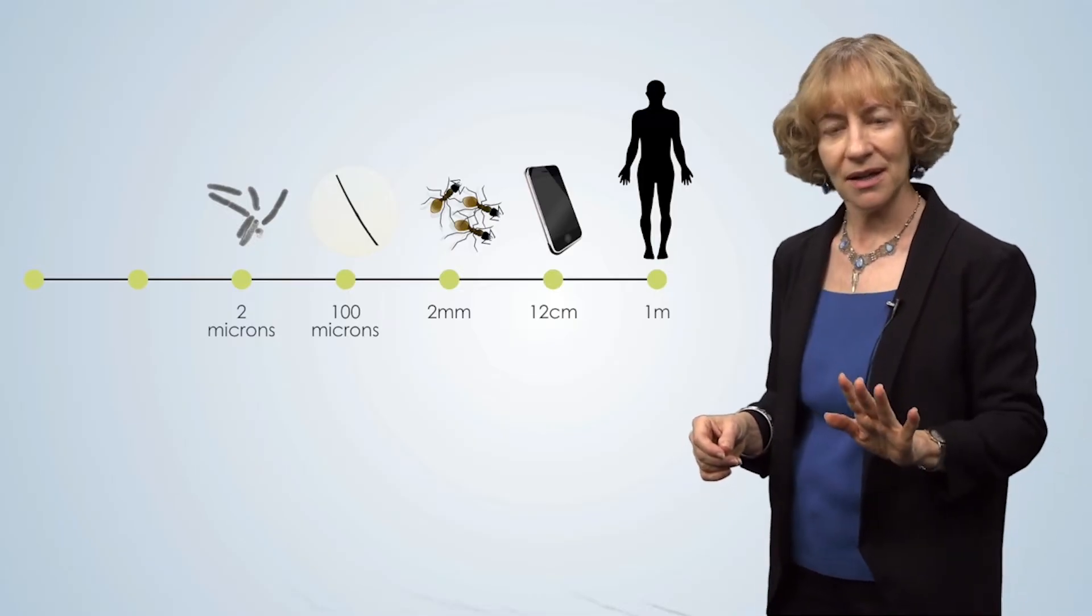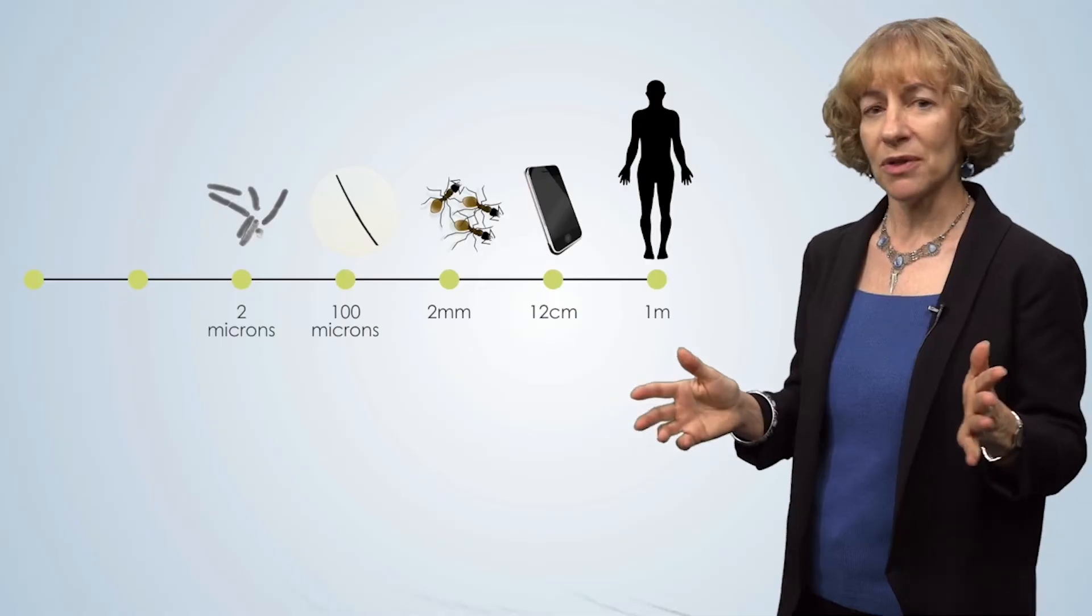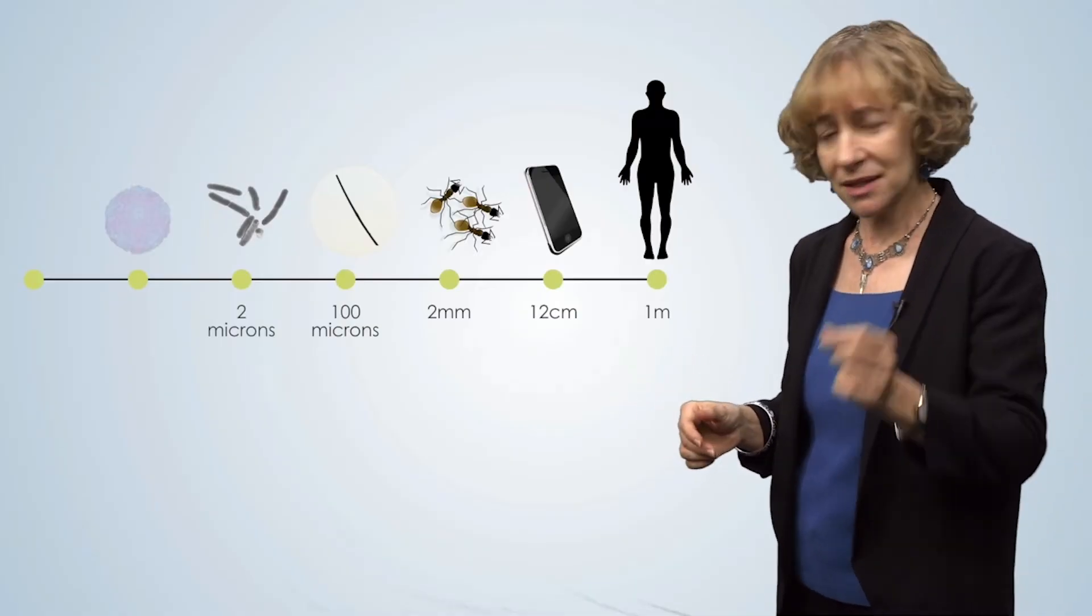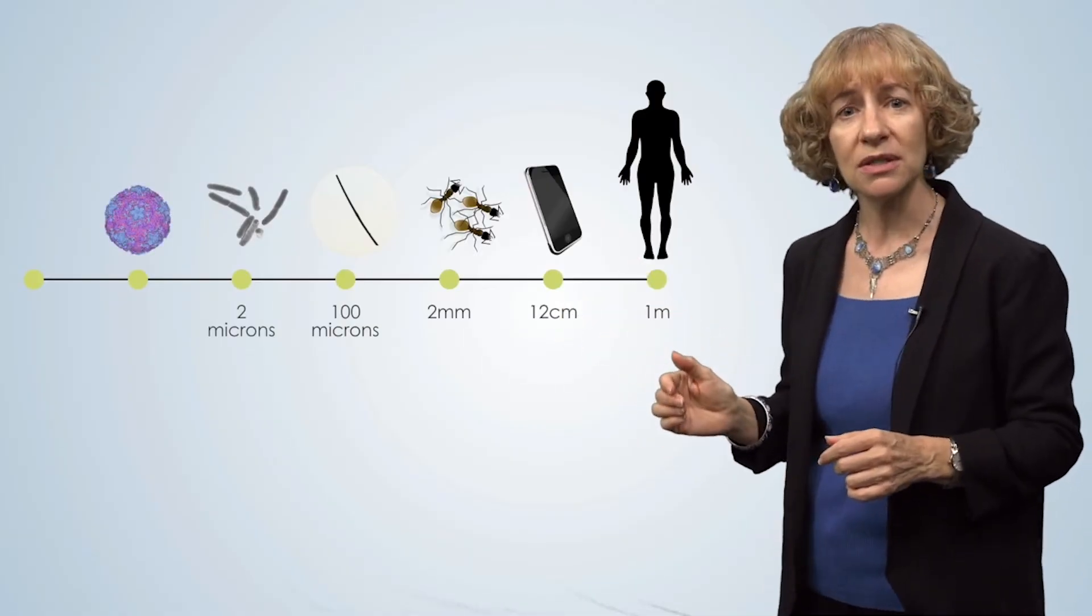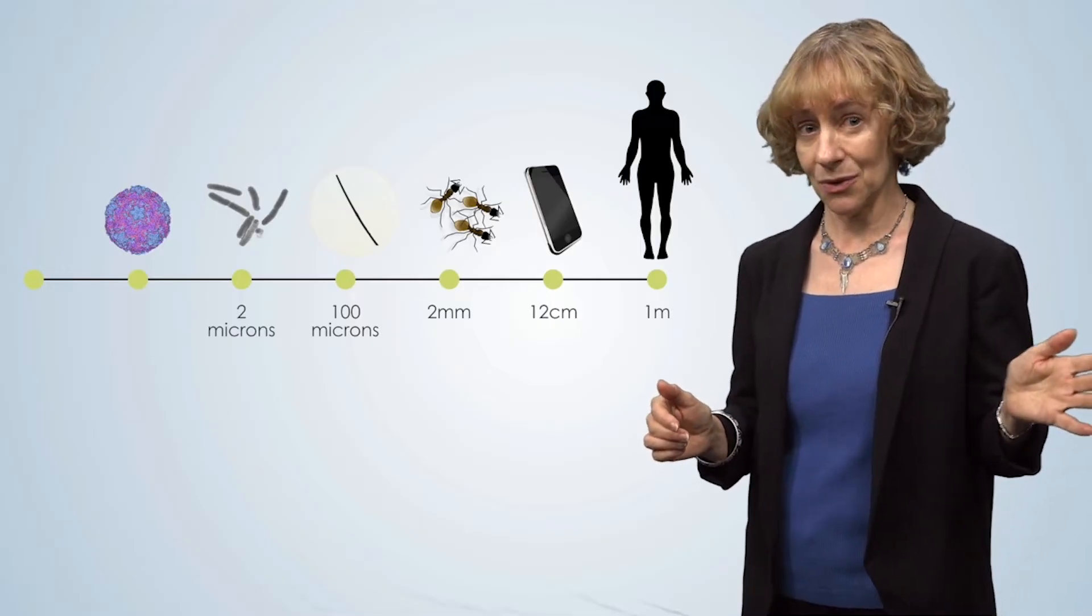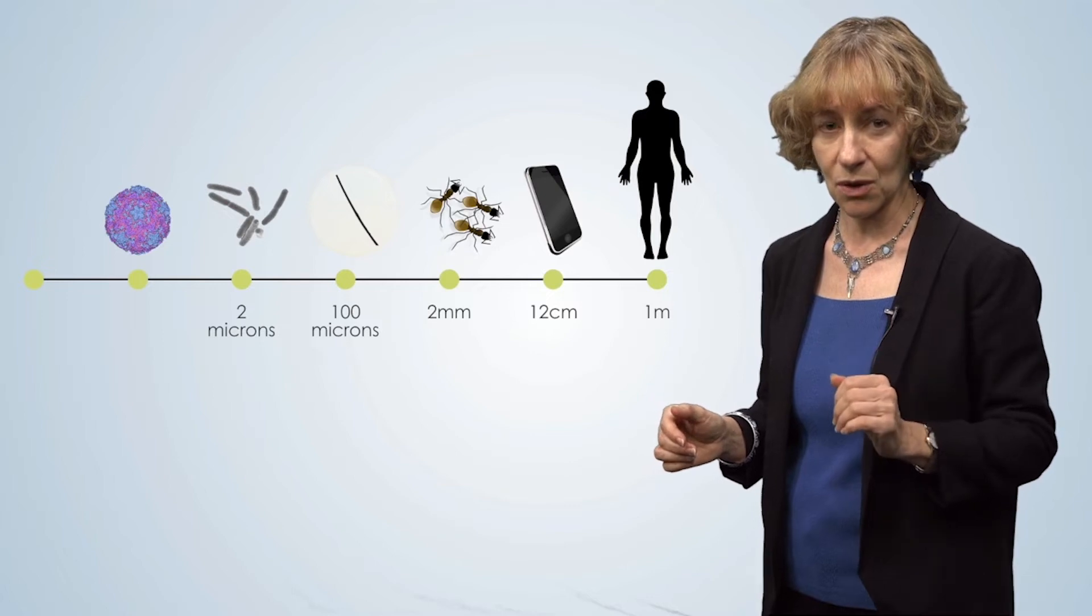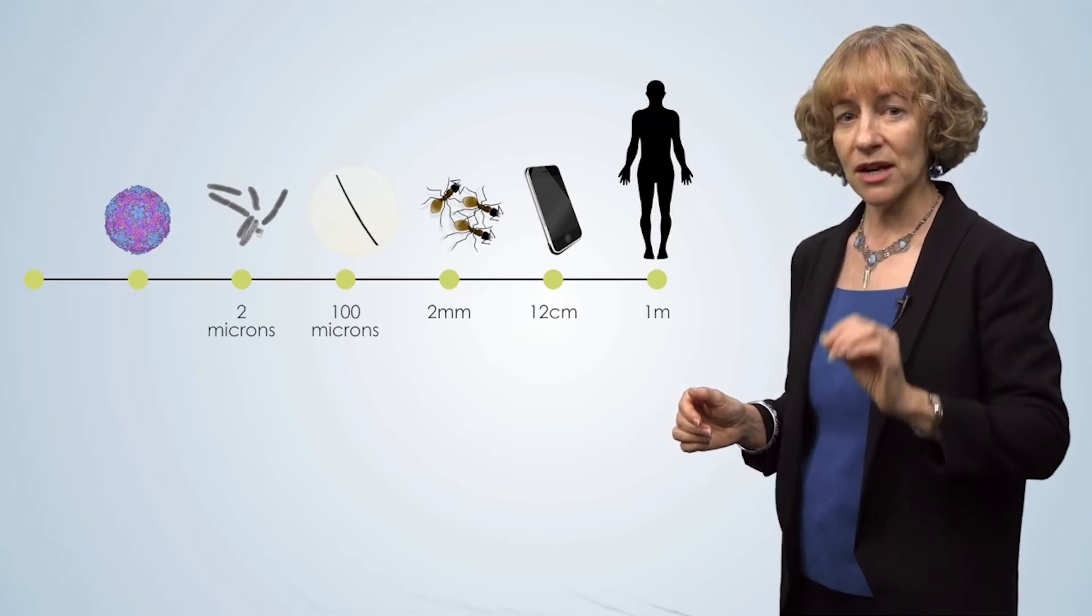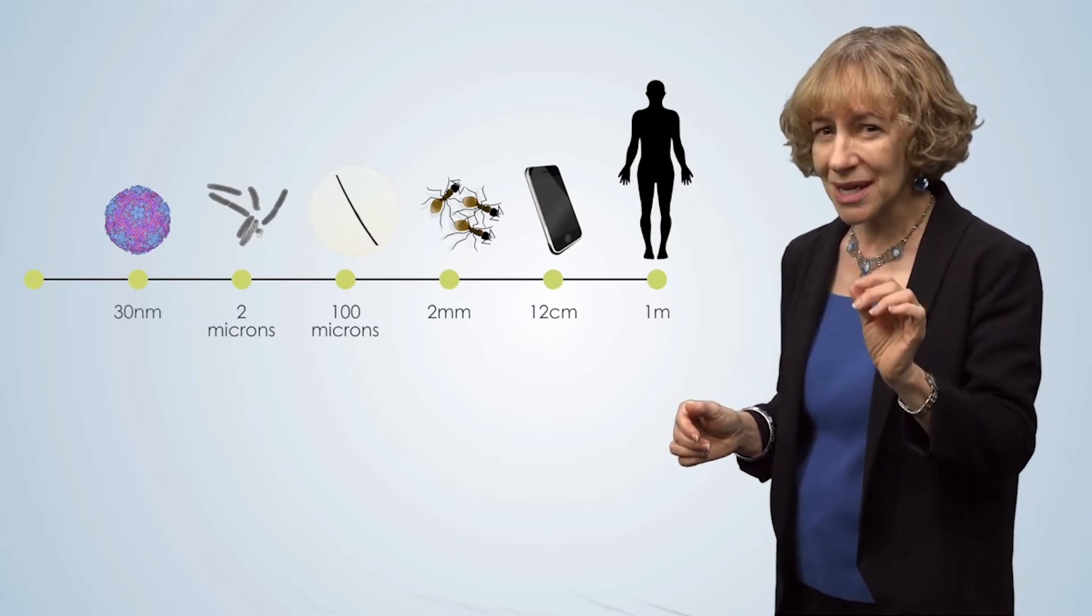But hold on, viruses and DNA are much smaller than bacteria. So our next object here is a reconstructed image of a virus. This isn't just any old virus either. This is the rhinovirus, which is the cause of the common cold. The width of a rhinovirus is a mere 30 nanometers.